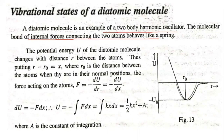u is equal to half of k into (r minus r₀) the whole square. The potential energy u of the diatomic molecule changes with the distance r between the atoms. Setting r minus r₀ equal to x, the force equation is minus du by dx.